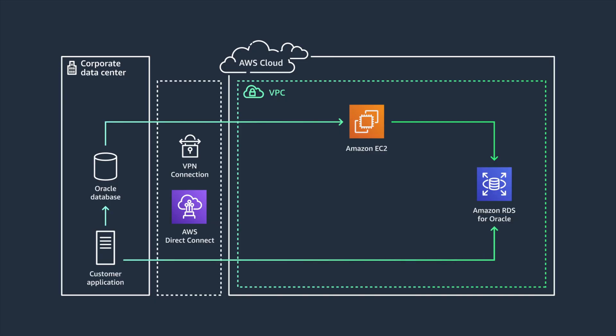Once your data is fully migrated, you wrap up this migration process by changing the connection string in the application to point to the RDS cluster. Production workloads require your services to be highly available. Migrating a production database workload also requires you to minimize business disruptions by keeping the service online as much as possible.